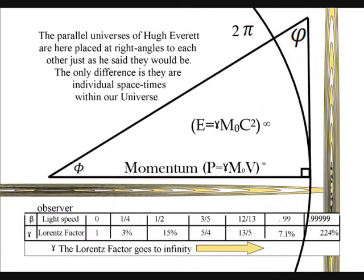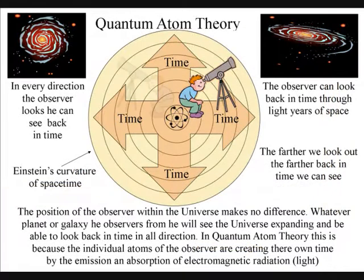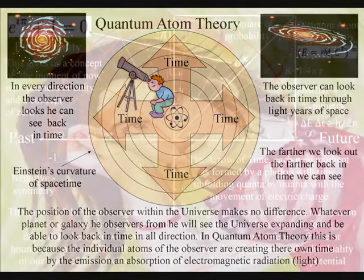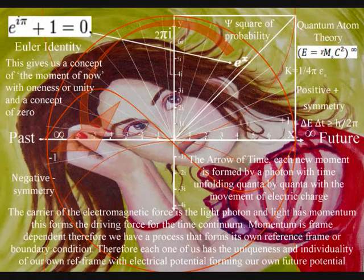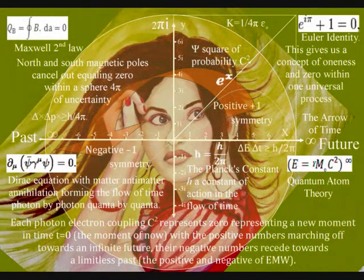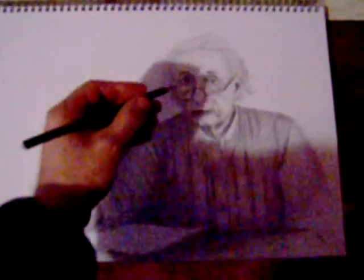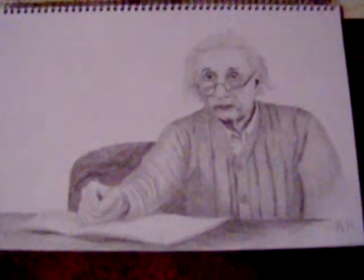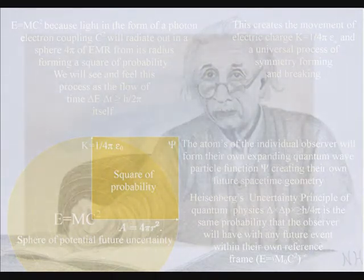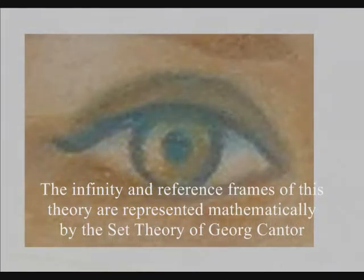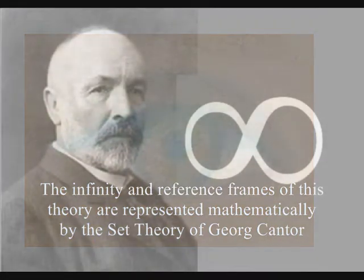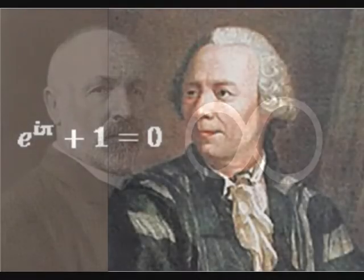Therefore an observer can look back in time at the beauty of the stars in all directions from the center of their own reference frame. This is because they are forming their own space-time by collapsing the waves of light into new photon oscillations, forming their own future potential. An artist will take energy and time to create a work of art because the atoms of the hand and eye have bonded together, forming the movement of electric charge and creating their own potential future. Creation is truly in the hand and eye of the beholder. This video will put forward the idea that only an infinity of possibilities could form the diversity and complexity of life.